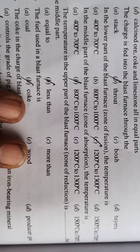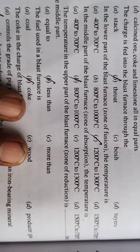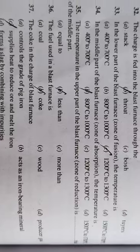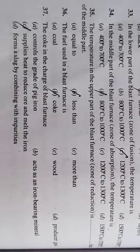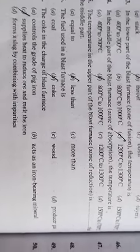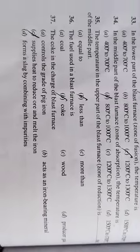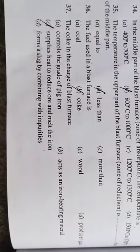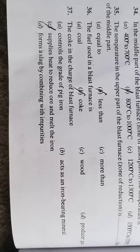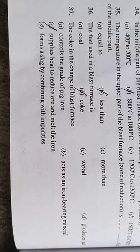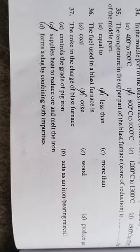In the middle part of the blast furnace, the zone of absorption has a temperature of 800°C to 1000°C. The temperature in the upper part is in the zone of reduction. The fuel used in the blast furnace is coke, which supplies heat to reduce the ore and melt the iron.